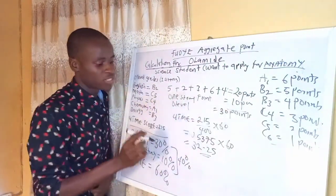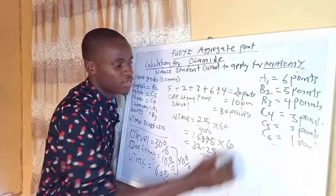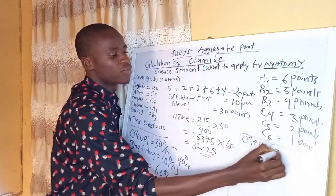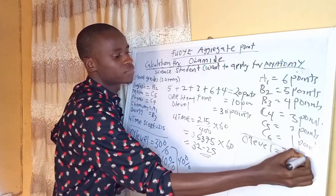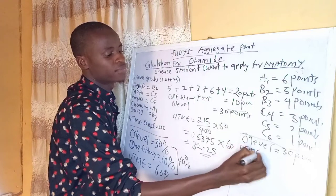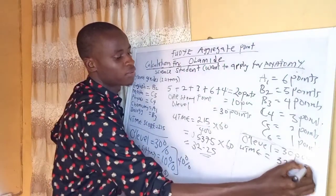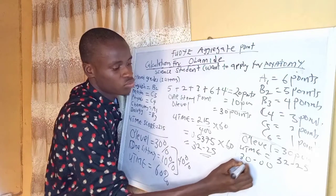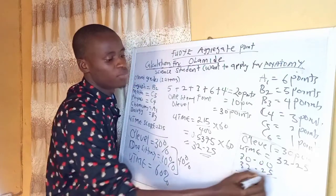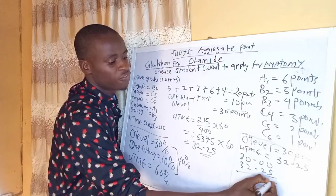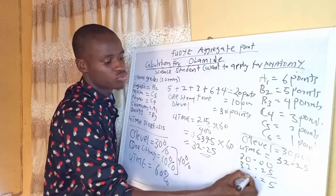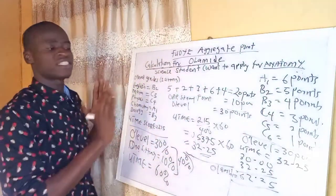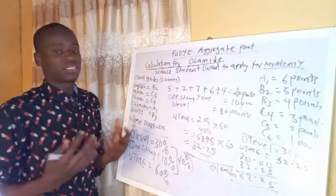Now the final point for UTME would be 32.25. Finally, to add up the points, for O-level it is 30 points, for UTME it is 32.25 points. For O-level equals 30 points, and for UTME equals 32.25. Now it will be 30.00 plus 32.25, which equals 62.25. Olamide is having 62.25.